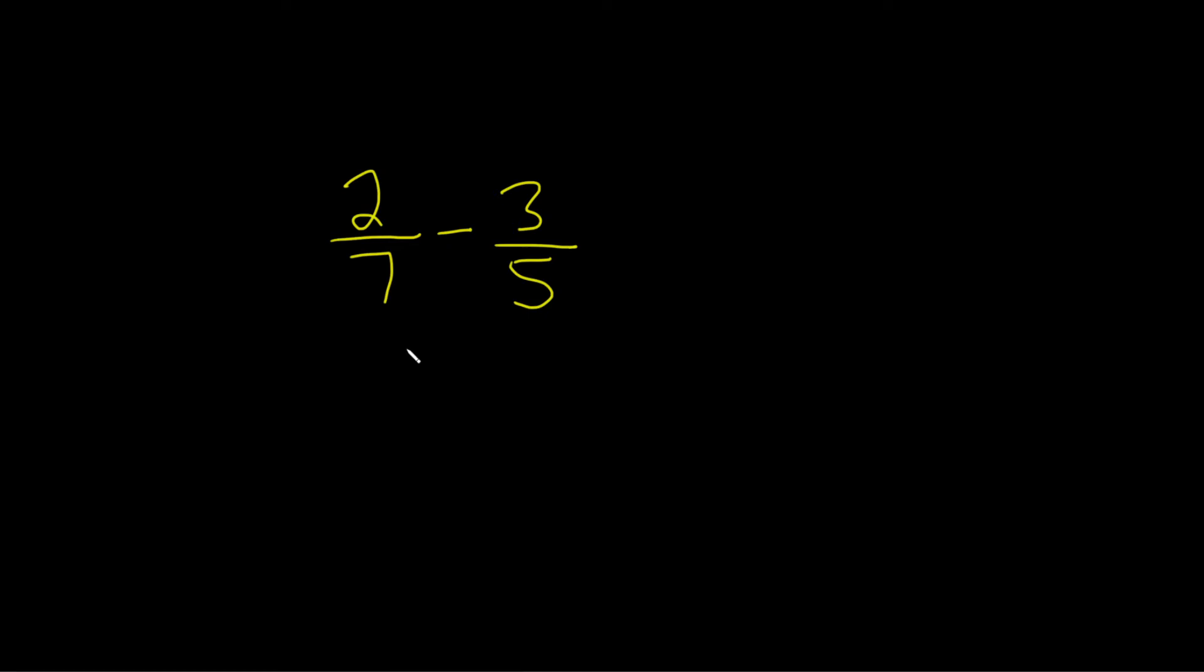In this problem we're going to subtract the fractions 2 over 7 minus 3 over 5. The first step is to find a common denominator.